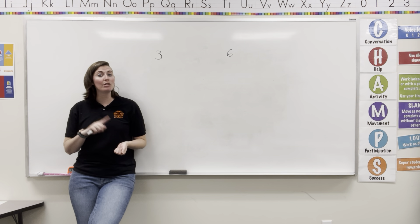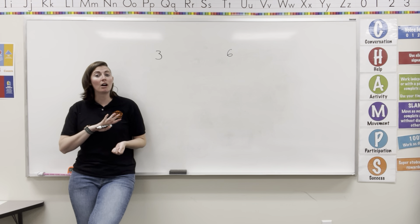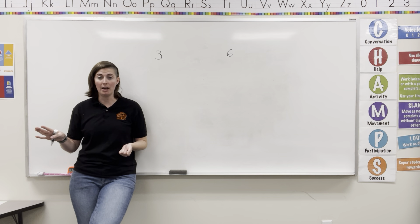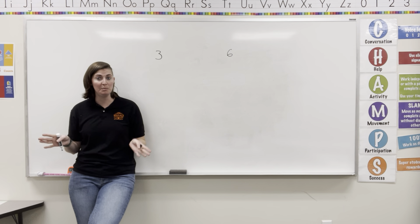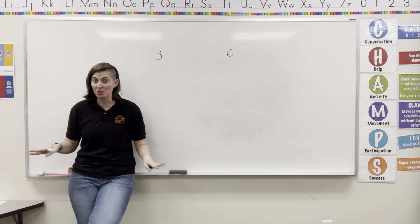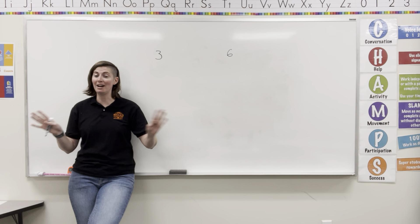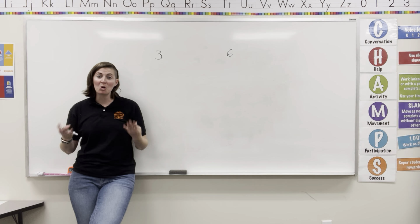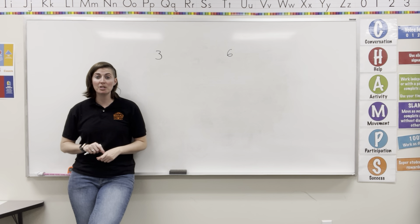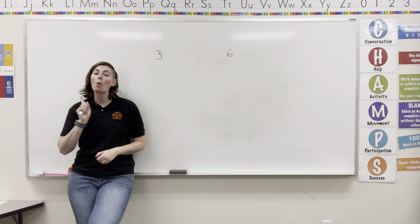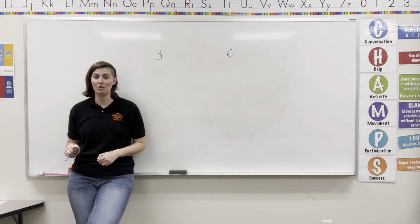Now, 0 and 1 are not prime numbers, and they are not composite numbers. 0 and 1 are very special — they just don't fit into prime or composite; they're kind of on their own. So, we're going to check to see if the two numbers on the board are either prime or composite — do they have two factors or more than two factors?